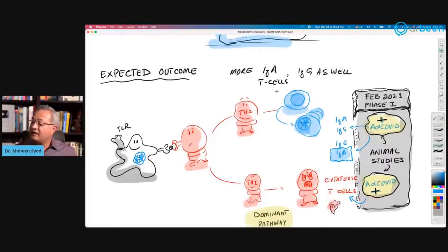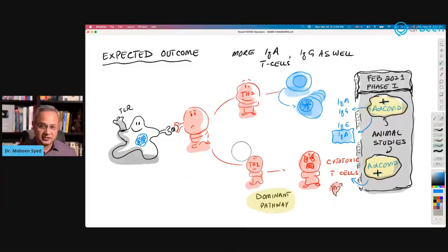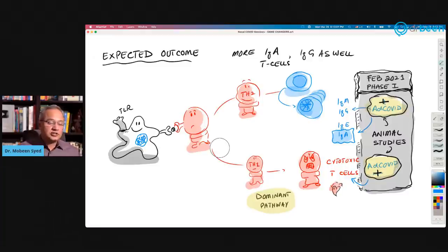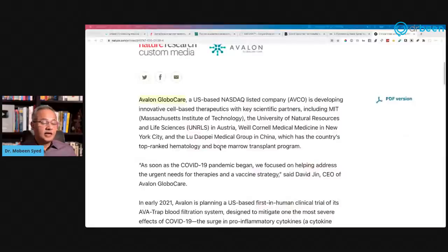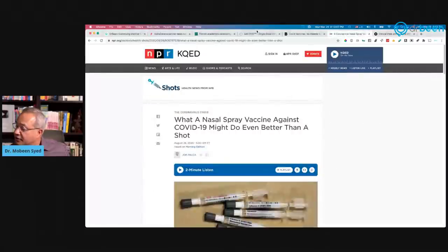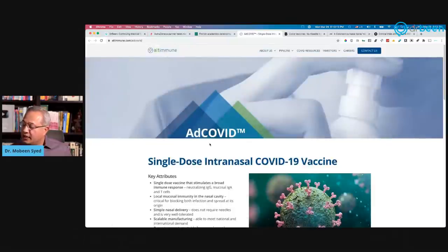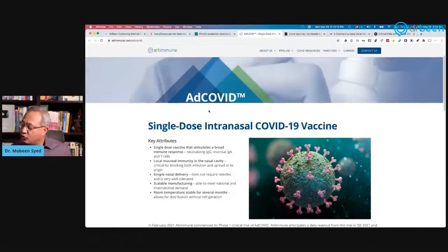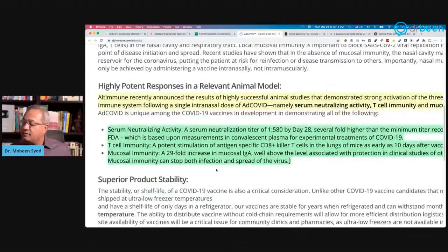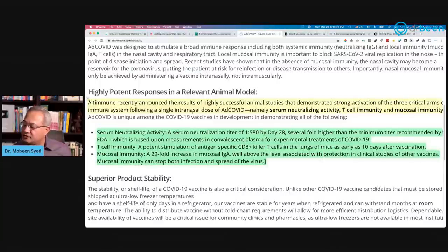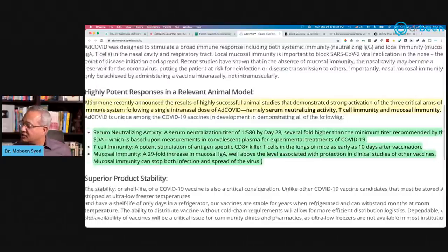Now what is expected outcome? We do not have any phase one trial or phase two trial results, so we can't exactly say what will happen. But there is one interesting thing. This is AltImmune, and their vaccine is adenovirus AdCOVID. If you see here, this is the animal trials. And it is worth reading. AltImmune recently announced the results of highly successful animal studies that demonstrated strong activation of the three critical arms of the immune system.